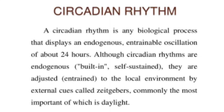Let's talk about circadian rhythm. A circadian rhythm is any biological process that displays an endogenous and trainable oscillation of about 24 hours. Although circadian rhythms are endogenous — built-in and self-sustained —